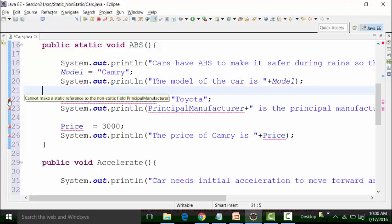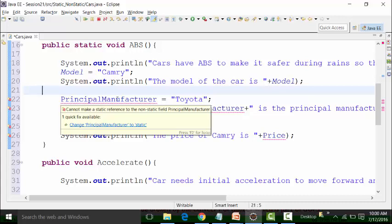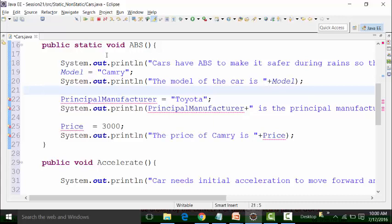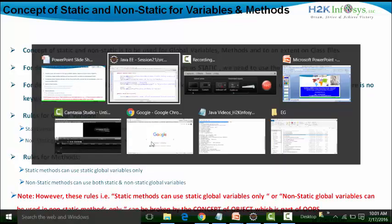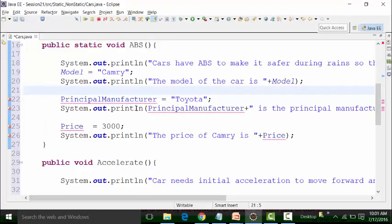Cannot make a static reference to a non-static field. Principal manufacturer is a non-static variable — how can you put it in a static method? According to the rule, static variables can be used in static methods and non-static methods. Non-static global variables can be used in non-static methods only. So using non-static global variables like principal manufacturer and price in the static ABS method is creating a problem — that is why the compiler is showing an error.